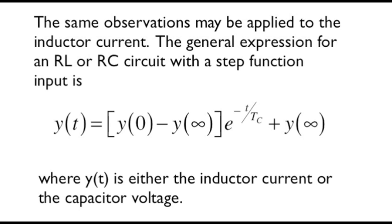For the general state variable y(t), we have: y(t) equals the initial value minus the final value, times e to the minus t over tc, plus the final value. Finding the state variable is a four-step process. First, find the initial value. Second, find the final value. Third, find the time constant — either RC (Thevenin resistance times capacitance) or L over R (L over Norton resistance). Fourth, incorporate those three numerical values into the general equation.